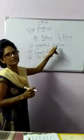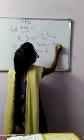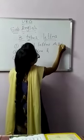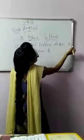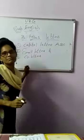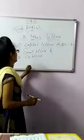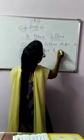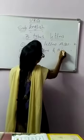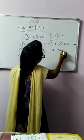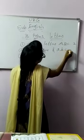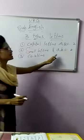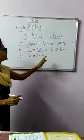What are the capital letters? They are capital A, capital B, capital C... all the way to capital Z. Those are capital letters. And small letters — what are small letters? Small a, small b, small c, all the way to small z. These are small letters.